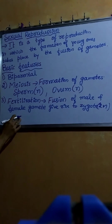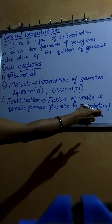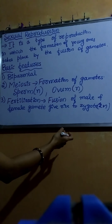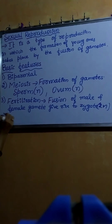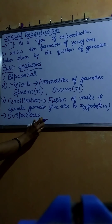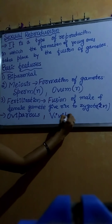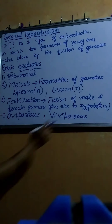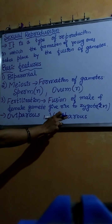These are the important basic features of sexual reproduction. The zygote repeatedly undergoes cell division and gives rise to young ones. In some organisms, the egg develops and gives rise to young ones — these are called oviparous, or egg-laying organisms, for example birds. Human beings are viviparous, meaning organisms that directly give birth to young ones.